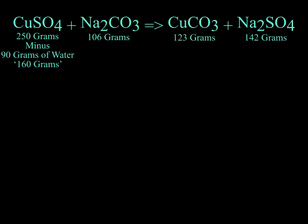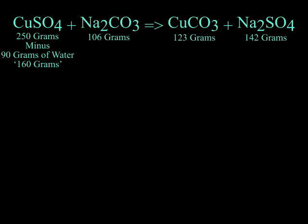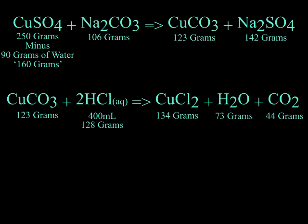Take your samples after they are completely dry and container them for future use. To review what we did today: we reacted 250 grams of copper sulfate with 106 grams of sodium carbonate to yield 123 grams of copper carbonate. We then reacted the copper carbonate with 400 milliliters of 32% hydrochloric acid to yield 134 grams of copper chloride. We have shown you how to synthesize copper chloride, which we will be using in the future for other projects.